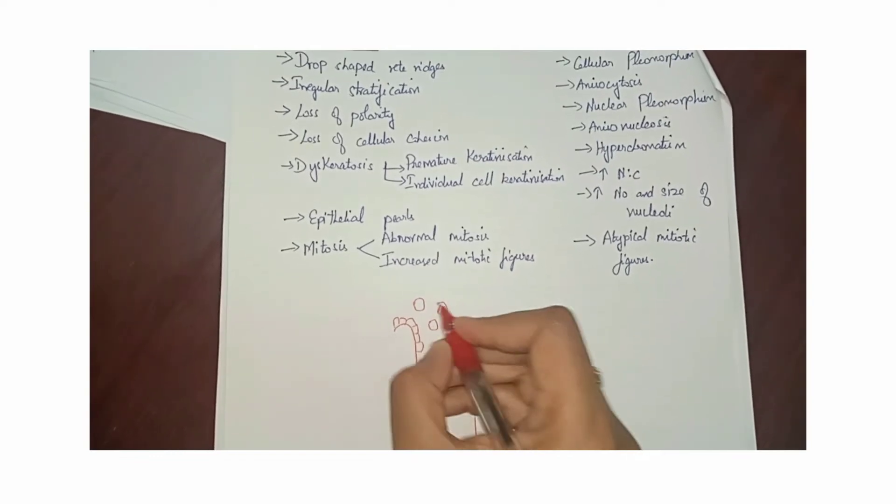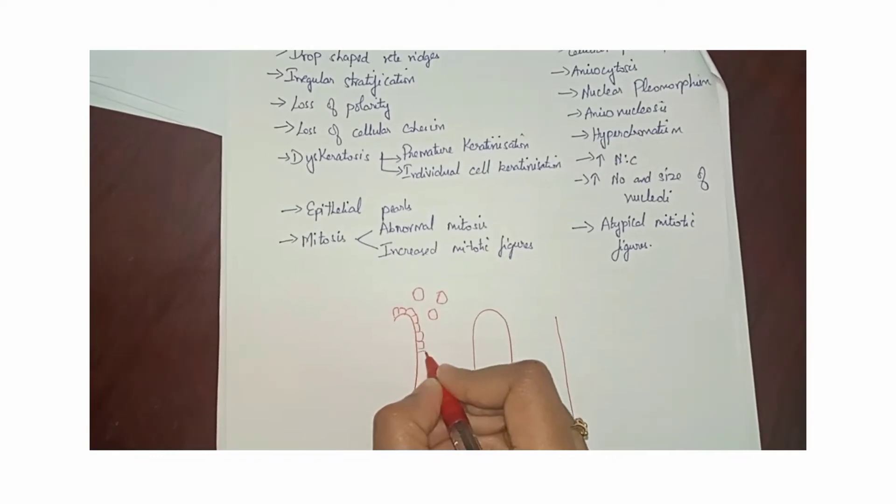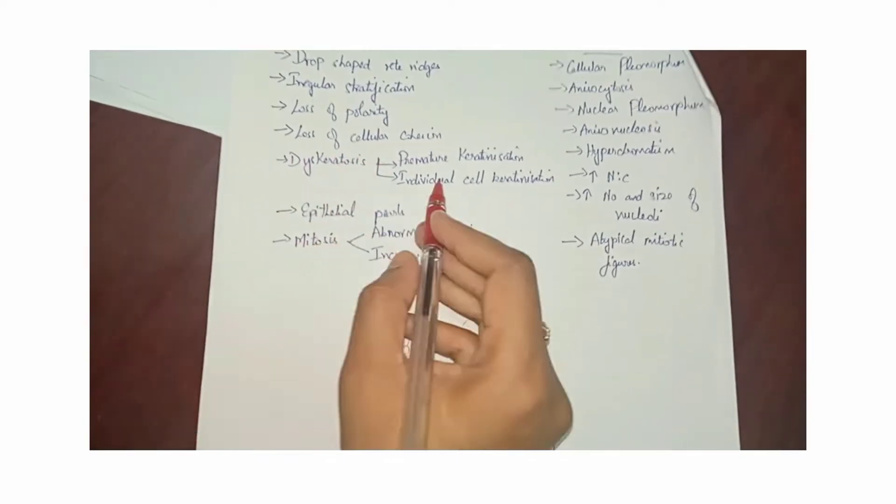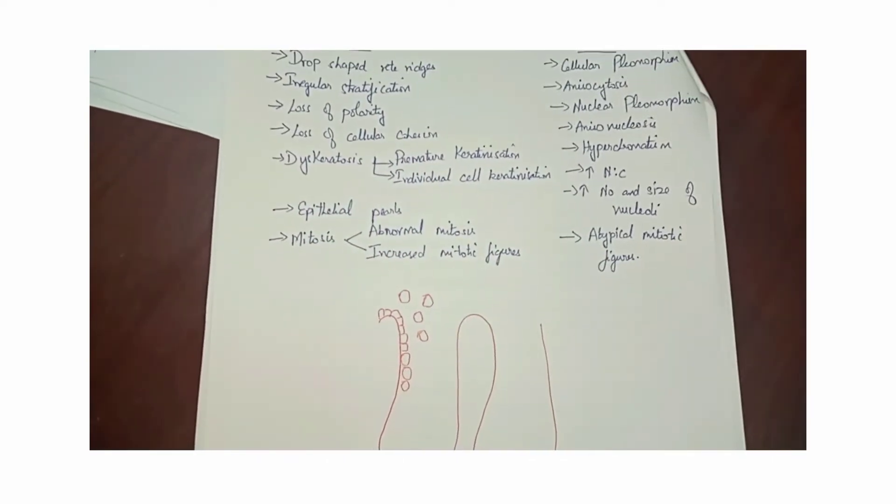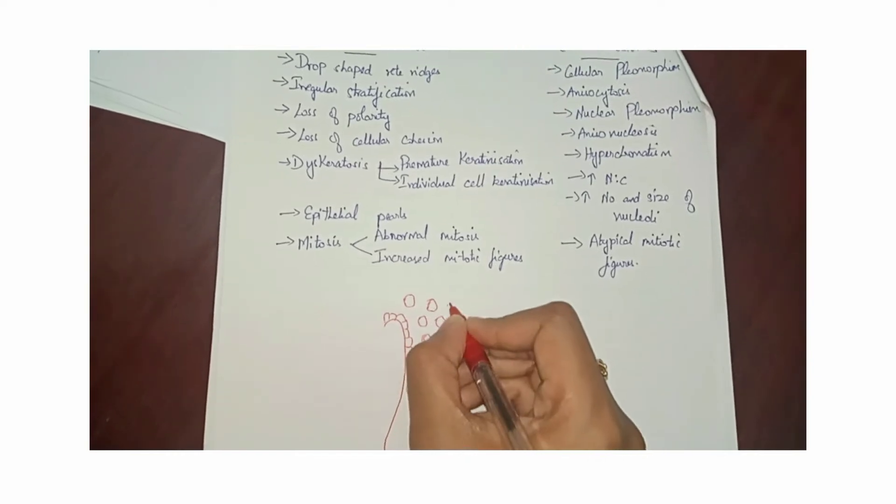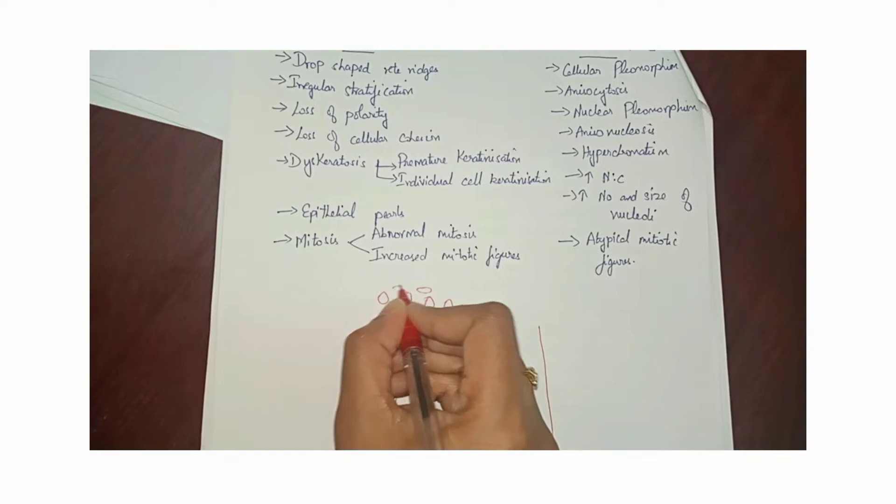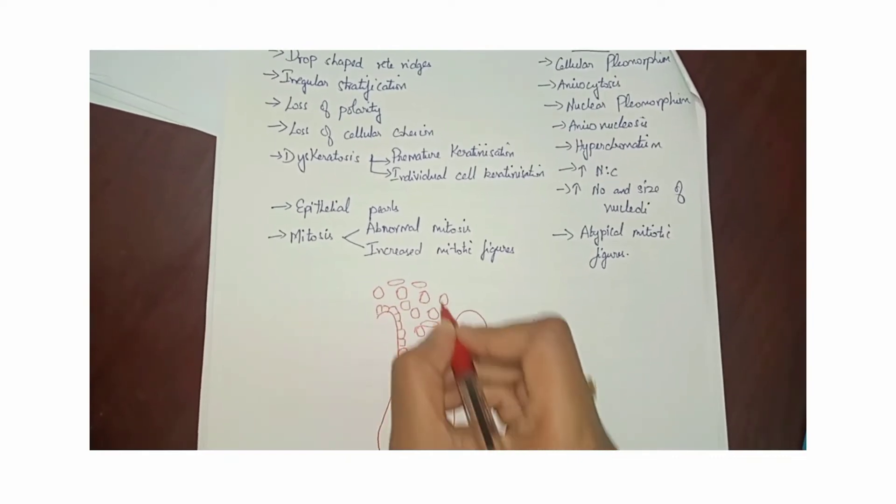The third one is the loss of polarity. Then there is the loss of cellular cohesion. That is, the cells are placed or the cells become distanced apart. They are no more in proper adhesion.